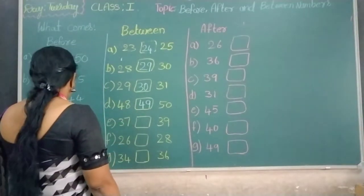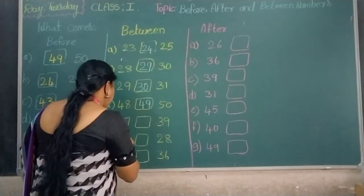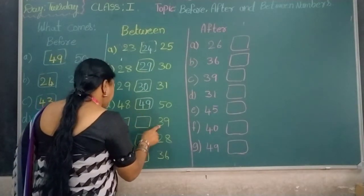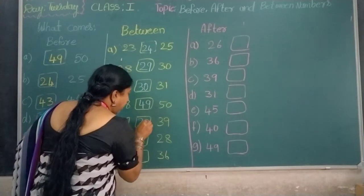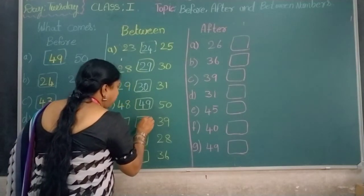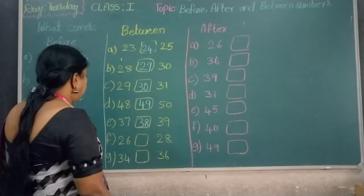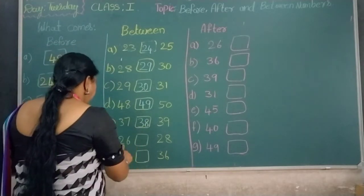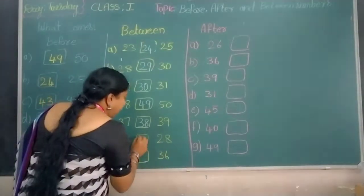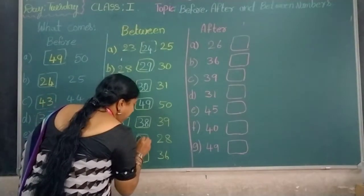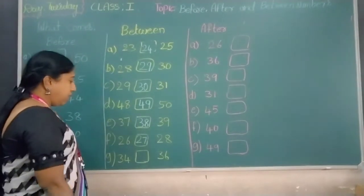Which number comes in between 37 and 39? Number 38 comes in between. Which number comes in between 26 and 28? Number 27 comes in between.